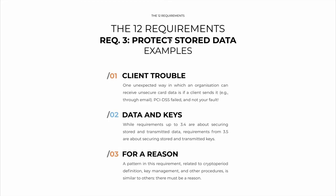What are some examples? The first is an unexpected way in which you can fail compliance: if you have clients that send you — for example via email — their personal account numbers, or even worse, their sensitive authentication data. It may not be your fault, but you immediately fail PCI DSS. You need a process to prevent your clients from doing this as well. Remember, if full credit card data in plain text arrives at your system, you fail — it doesn't matter where it came from.